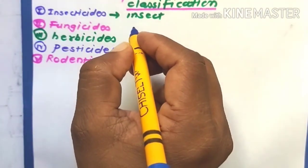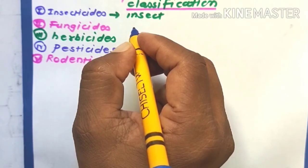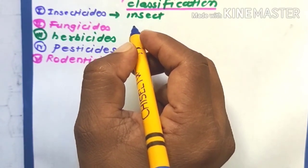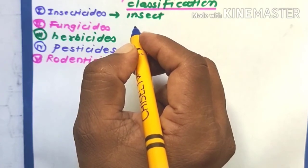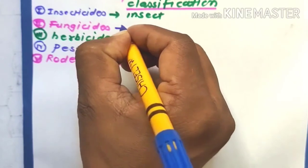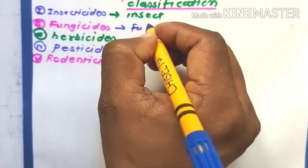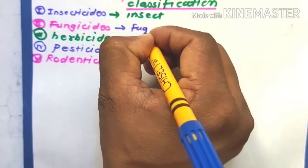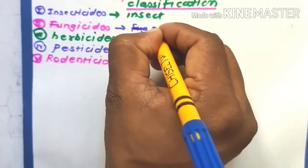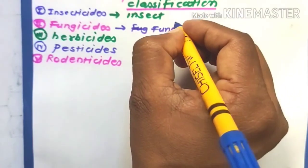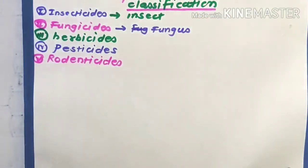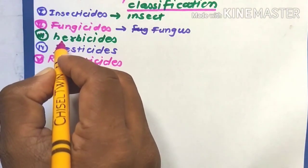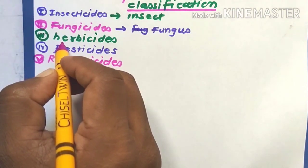The second one is fungicides. Fungicide is a chemical product that is used to prevent, destroy, or inhibit the growth of fungi. It is used to control and destroy the growth of fungi, preventing or inhibiting the growth of plants affected by fungal attack.